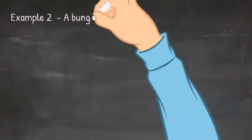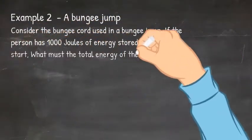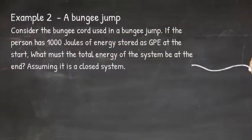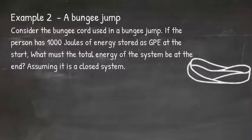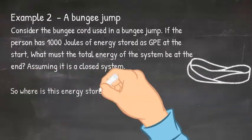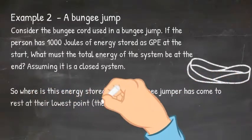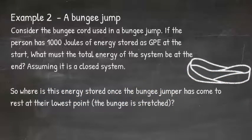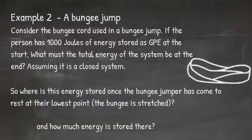Let's look at another example: a bungee jump. Consider the bungee cord used in a bungee jump. If the person has 1000 joules of energy stored in its gravitational potential energy store at the start, what must the total energy of the system be at the end, assuming it is a closed system? So where is this energy stored once the bungee jumper has come to rest at their lowest point, and how much energy is stored there?